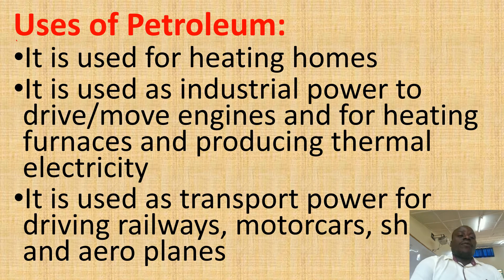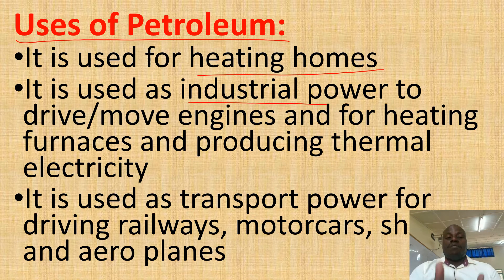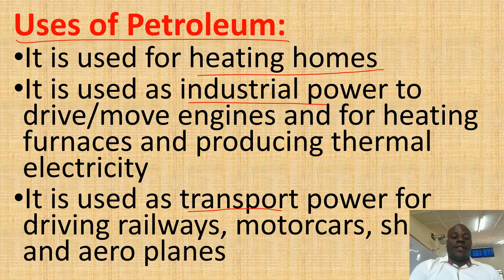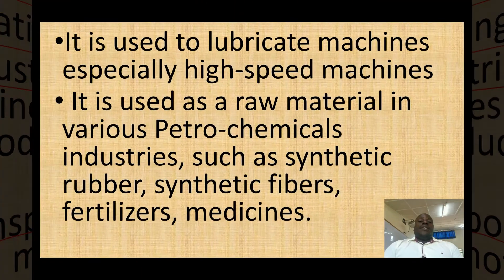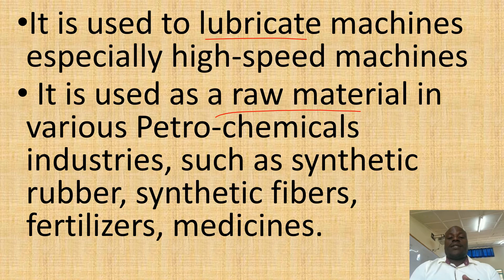What are the uses of petroleum? It is used for heating homes. It is used as an industrial power to drive engines and for heating and producing thermal electricity. It is used as transport power for driving trains, motor cars, ships, and aeroplanes. It is used as a lubricant to lubricate machines. It is also used as a raw material in various areas such as petrochemical industries.